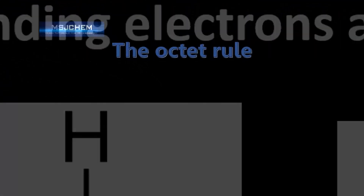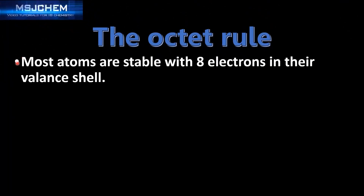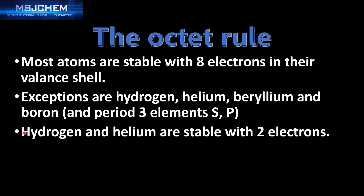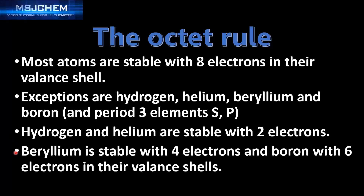Next we look at the octet rule. Most atoms are stable with 8 electrons in their valence shell — hence the octet rule; octet means 8. The exceptions are hydrogen, helium, beryllium, and boron, and also period 3 elements such as sulfur and phosphorus. Hydrogen and helium are stable with 2 electrons, beryllium with 4, and boron with 6 electrons in their valence shells.